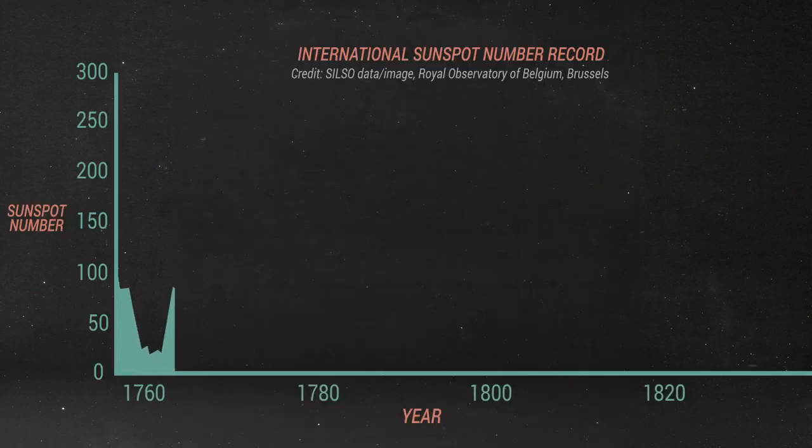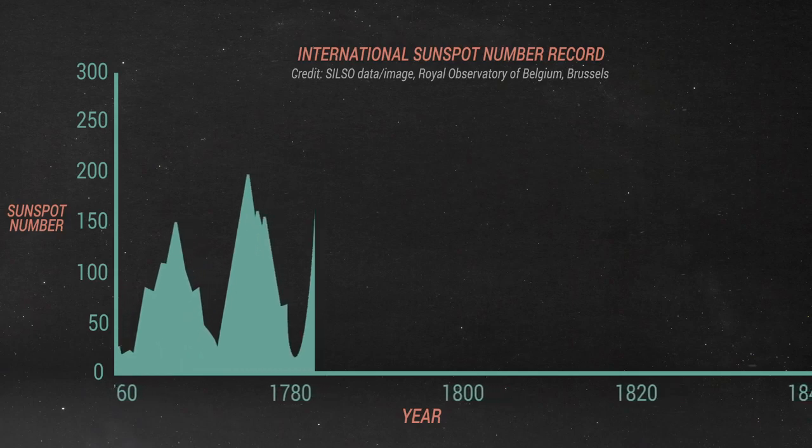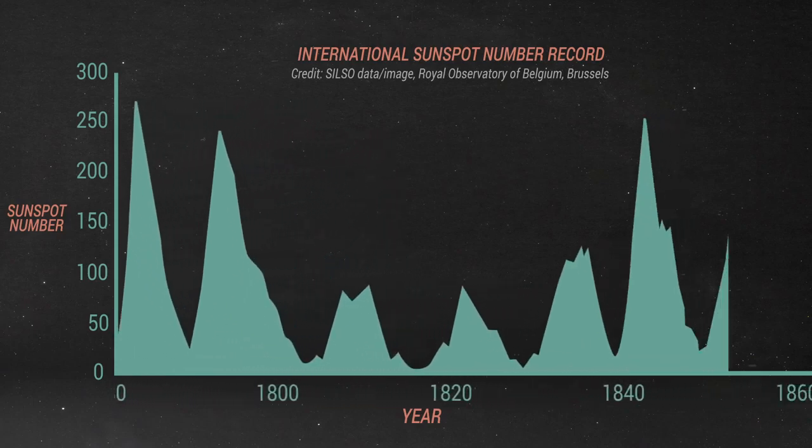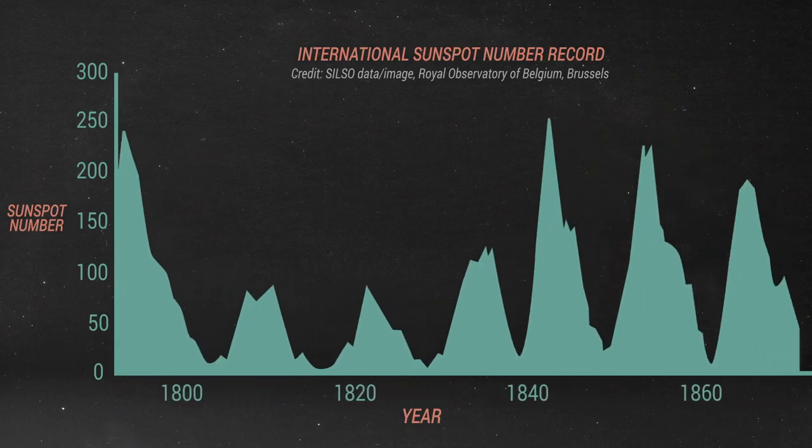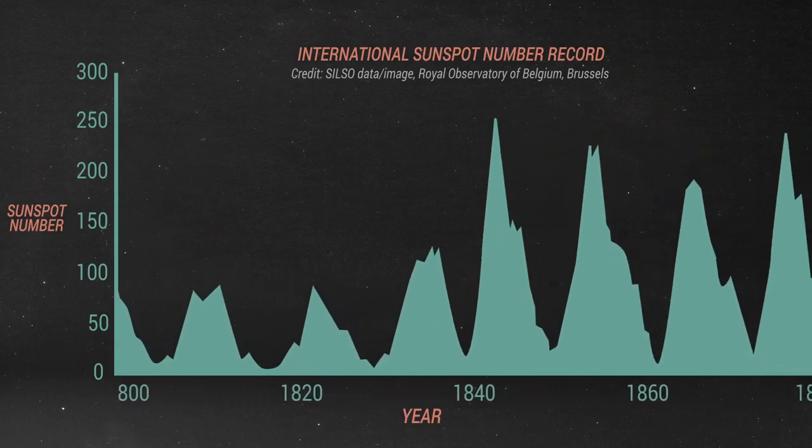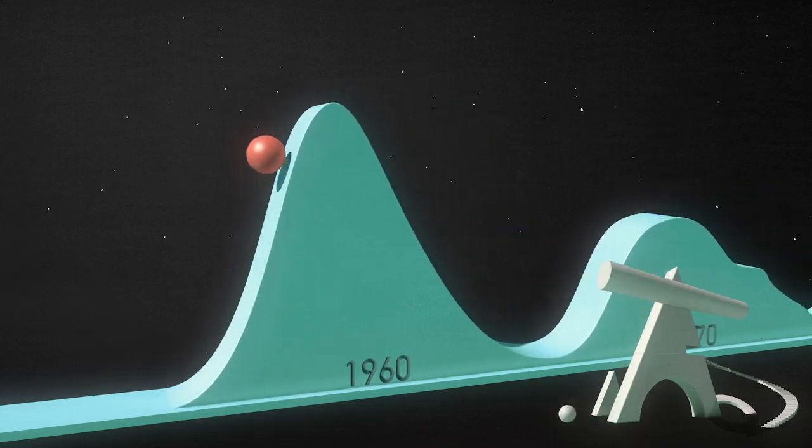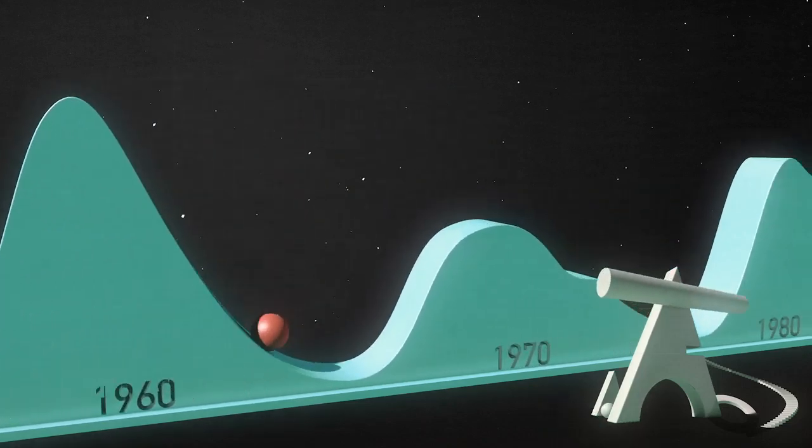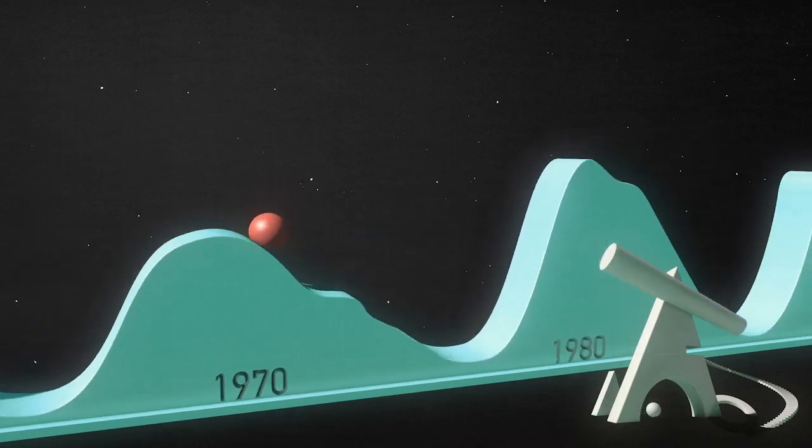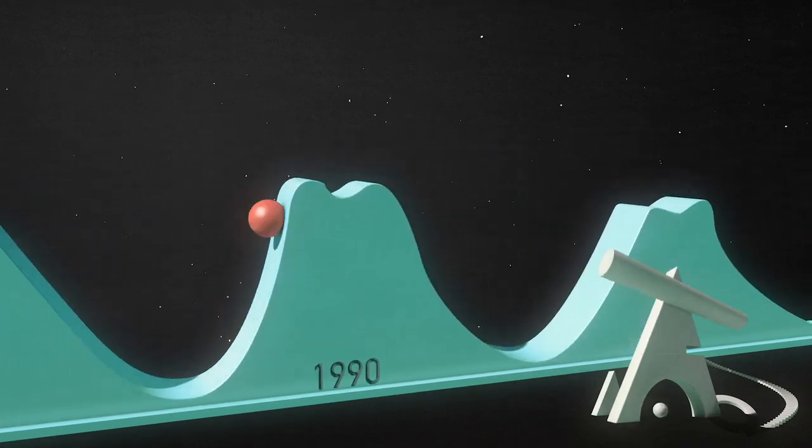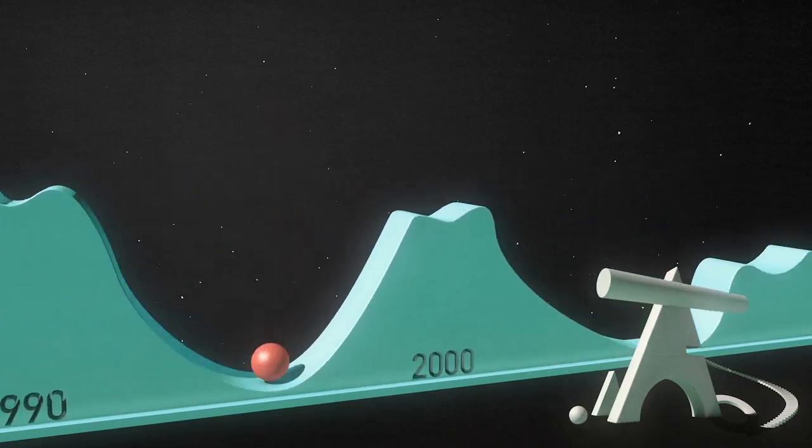The sunspot number record goes back farther than any other instrument, allowing scientists to analyze the sun's behavior over many, many solar cycles. Sunspot numbers are collected from observatories around the world and are averaged. During every 11-year cycle, the number of sunspots rise from zero to a peak and then go back down to zero again. Scientists use these numbers to determine when a new solar cycle begins and how active a cycle is.